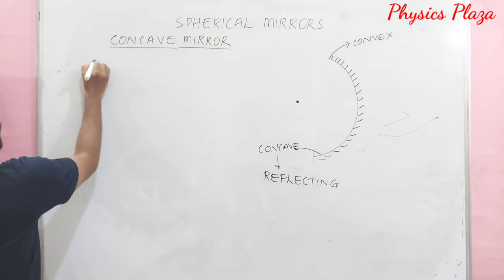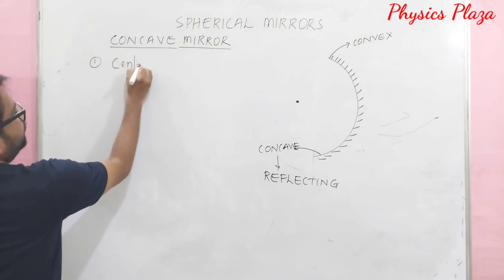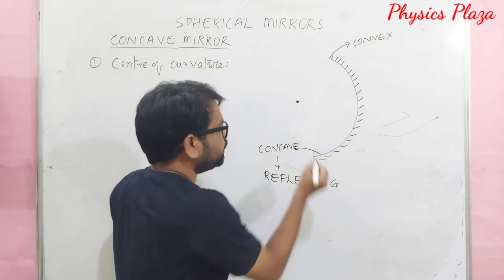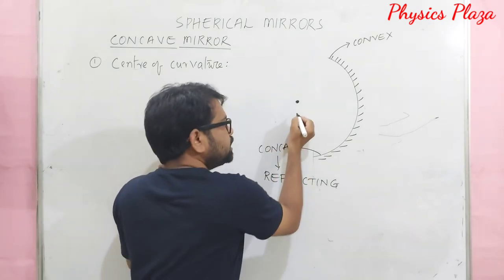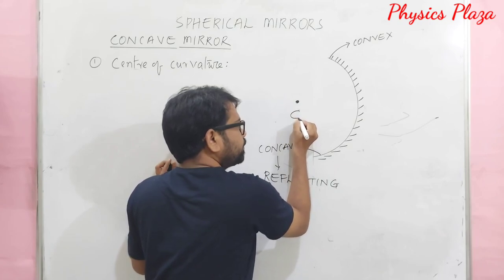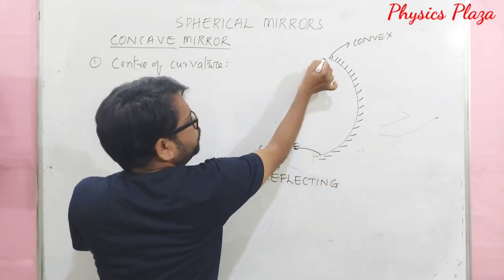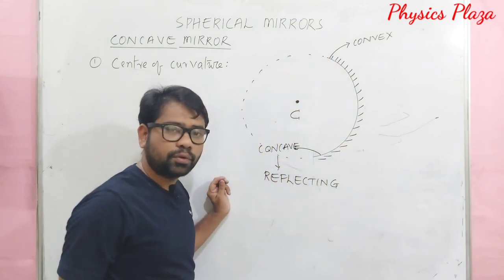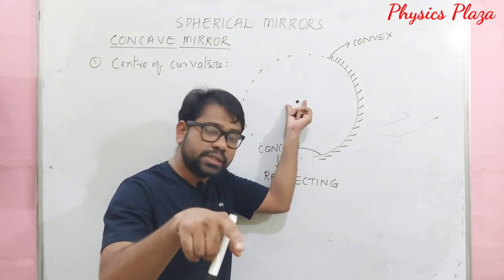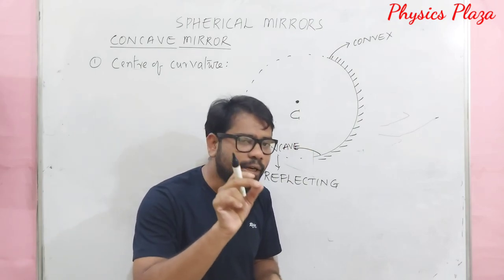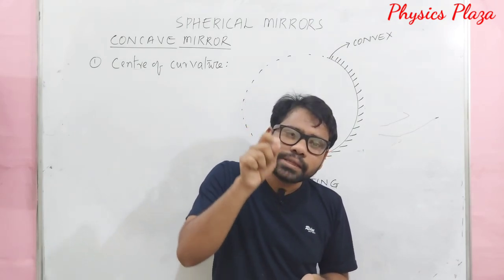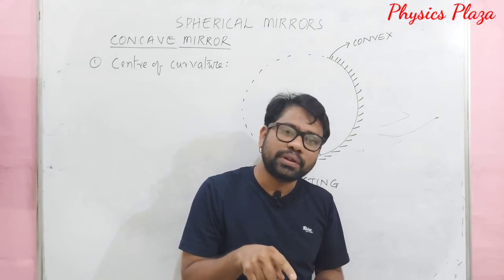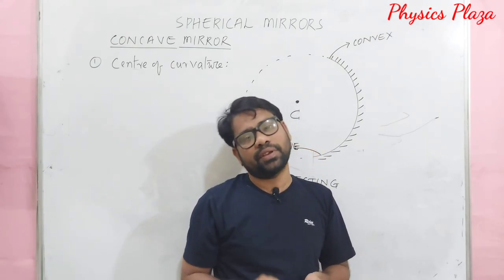The first important term is center of curvature. For a concave mirror, this is the center of the glass hollow sphere of which this spherical mirror was previously a part. The center of that sphere is called the center of curvature. It is represented by the letter C.